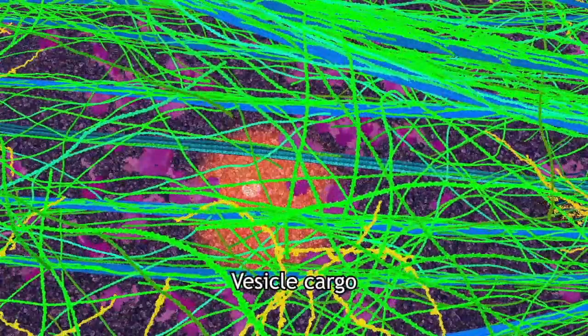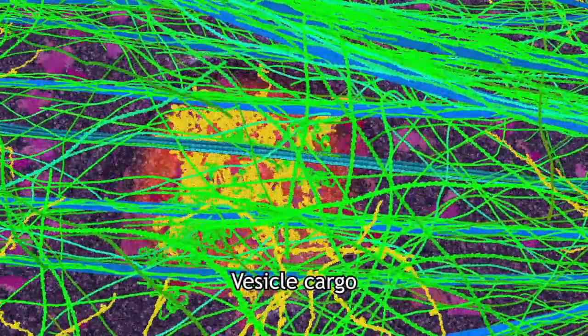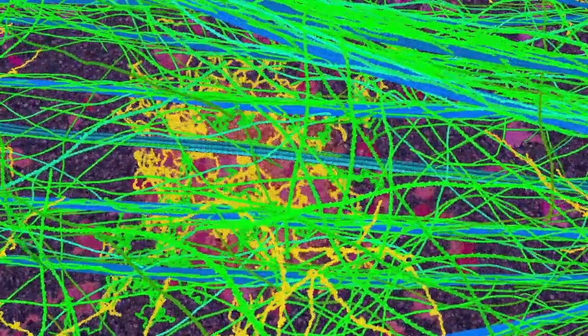A vesicle from the cell's interior releases its cargo of hemicellulose and pectin, which interact with the cellulose microfibrils.